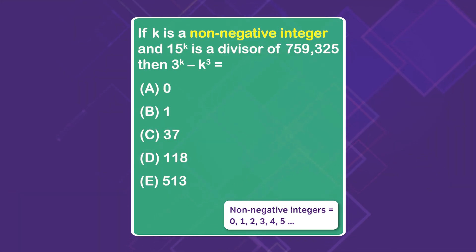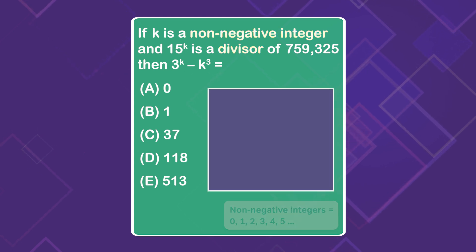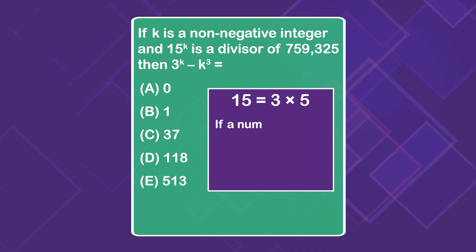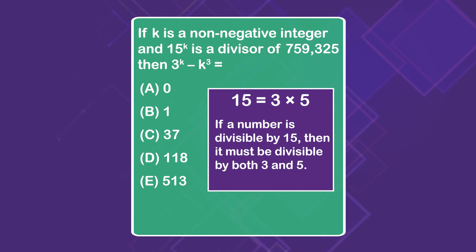The second vocab piece we need to focus on is divisor, which is another word for factor. That means that 759,325 is going to be divisible by 15 to the k power. So 15 to any power is going to be 15 times itself some number of times, right? That means this key fact: 15 equals 3 times 5. And so if any number is divisible by 15, then that number also must be divisible by both 3 and 5.